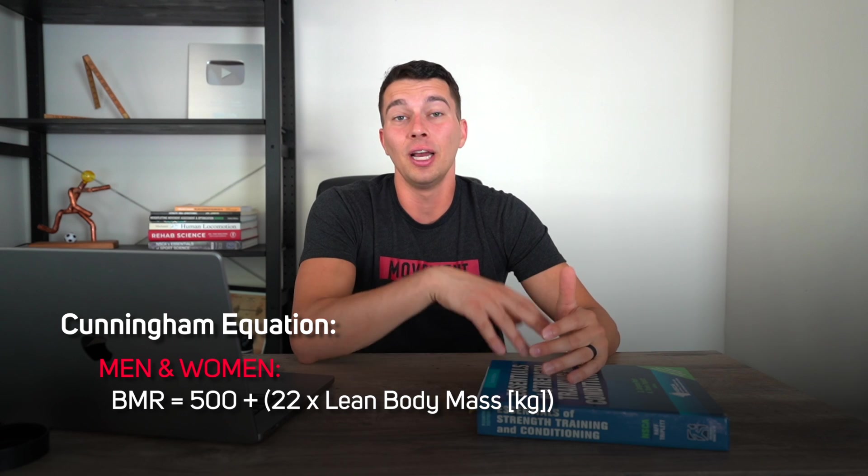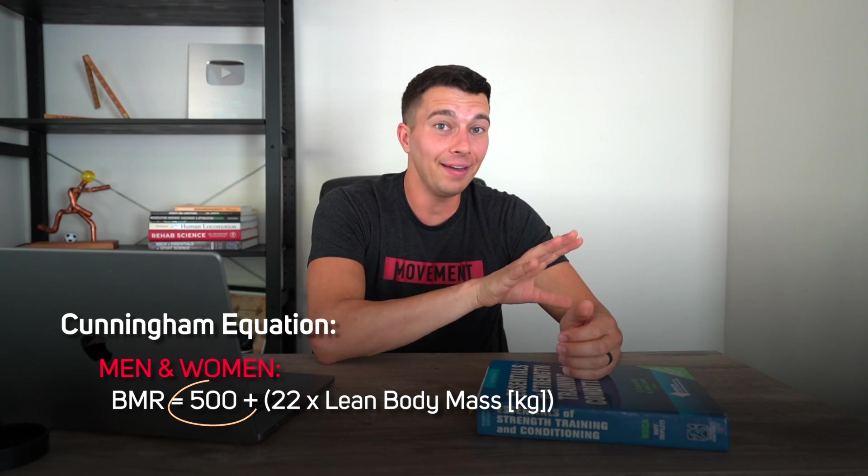The Cunningham equation is the same for both men and women, and it's pretty simple: 500 plus 22 times lean body mass in kilograms. Two important notes: if you have an older print of the CSCS book, the fourth edition had a misprint saying 550 calories, but the correct equation uses 500.